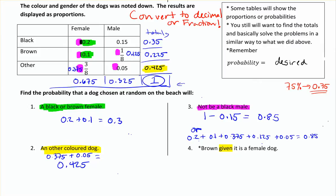Remember: when a table already gives you proportions or probabilities, you're not going to be making a fraction to get your probabilities, because they're basically given to you already. You just need to calculate the totals that you need.